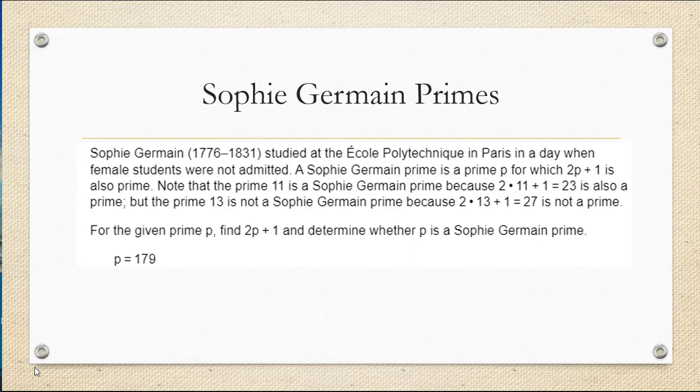Sophie Germain was a mathematician at a time when female students were not typically admitted to universities. A Sophie Germain prime is a prime p for which 2p plus 1 is also a prime.